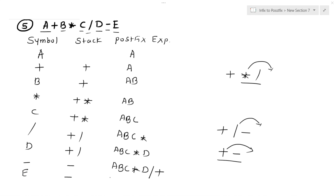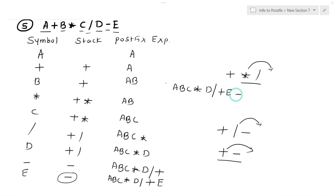The next symbol is 'e' — the stack has minus and the expression is a, b, c, multiplication, d, division, plus. Since e is an operand, it directly goes to the postfix expression. We have reached the end of the expression. The only remaining operator in the stack is minus, so it is popped. The final postfix expression is: a b c multiplication d division plus e minus.